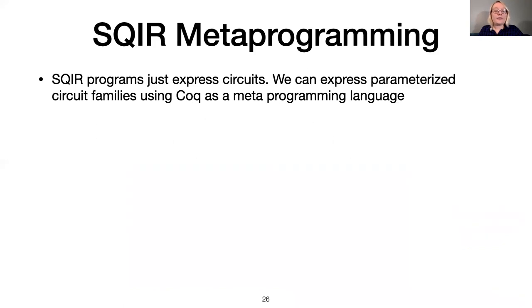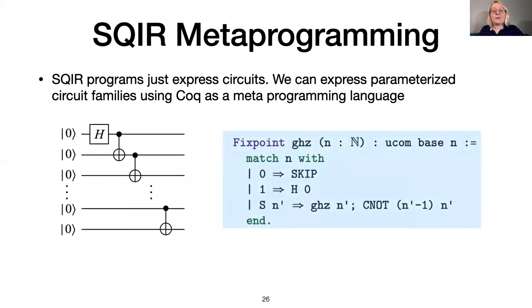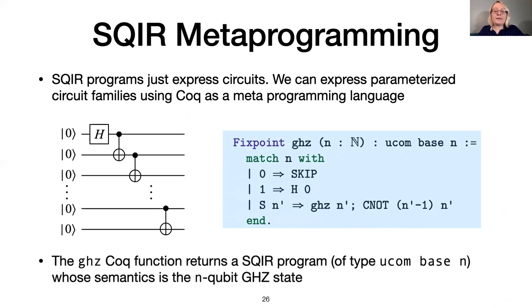Although SQUIRE itself is a simple language, we can still write interesting programs by relying on the host language. Here is an example of a Coq function that constructs an n-qubit SQUIRE program that prepares the GHZ state, which is a superposition of the n-qubit zero state and the n-qubit one state. GHZ is a recursive Coq function that applies a Hadamard gate to the first qubit in the base case, and applies a CNOT between two adjacent qubits in the recursive case. The return type says that the output is a unitary SQUIRE program, or UCOM, that uses our default gate set base and n-qubits.